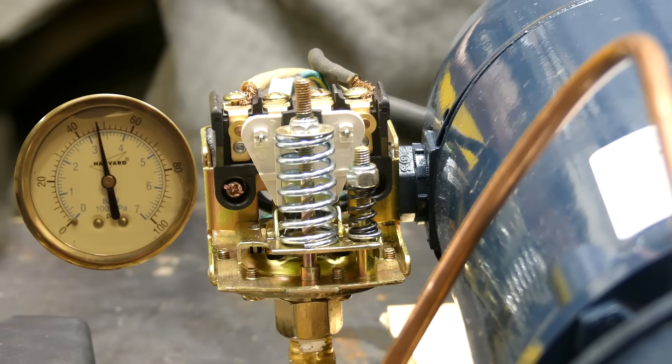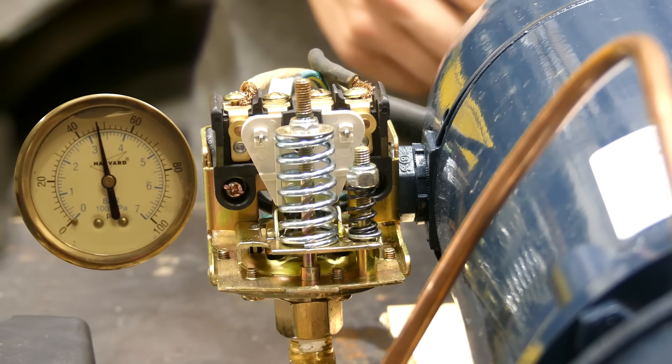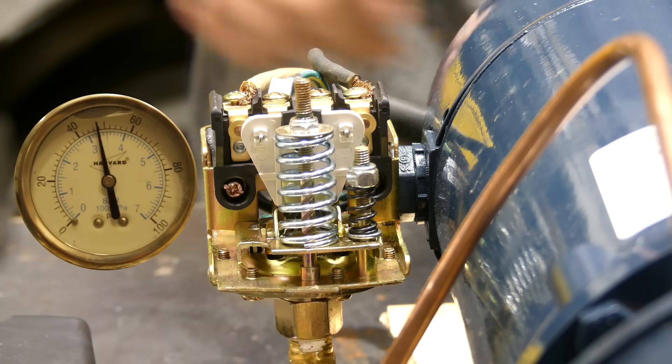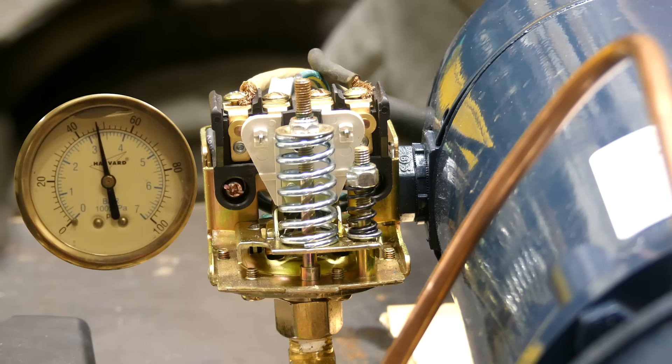So when I say two to three PSI per turn, that's going to basically be three to four turns for us to increase it. So we have the breaker shut off.